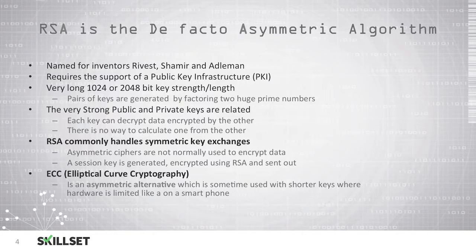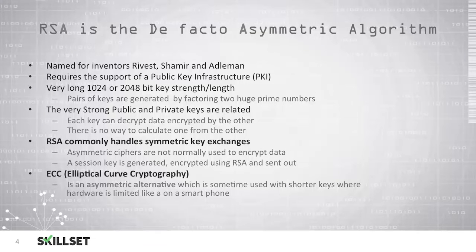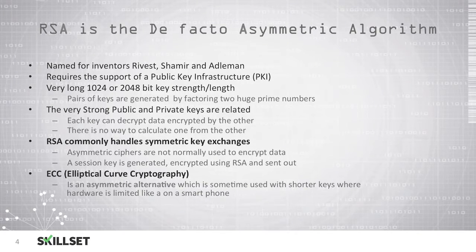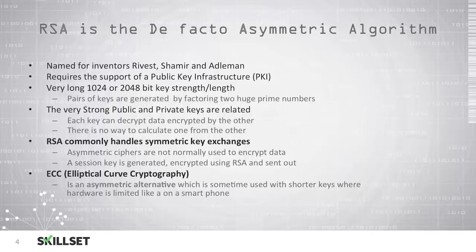An alternative to asymmetric encryption is Elliptical Curve Cryptography, or ECC. This is used when you have limited hardware resources, such as on a smartphone, and it allows you to encrypt data without the high overhead of asymmetric encryption. You want to be familiar with ECC on the CISSP exam because you may see a question asking about the type of encryption used on a smartphone — the answer would be Elliptical Curve Cryptography or ECC.